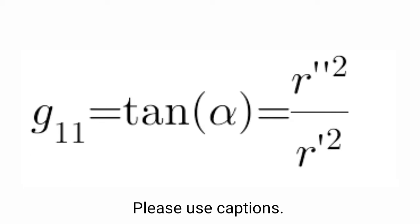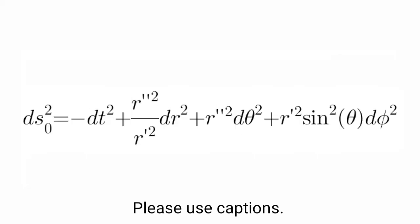So we can write the coefficients like these. And the radial metric is this, due to tangent law. So finally our metric looks like this. Note that it is the massless case. It's also known as oblate spheroidal coordinates.